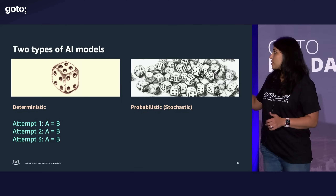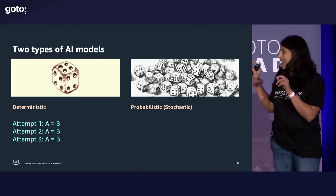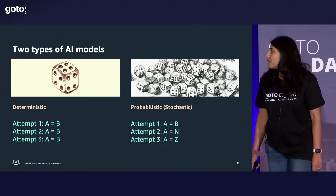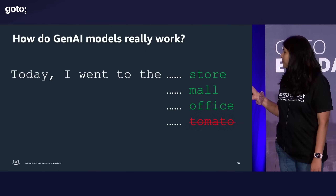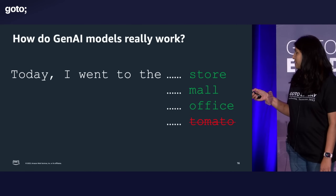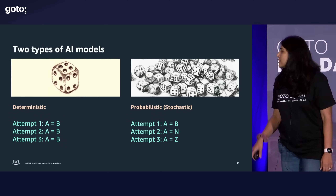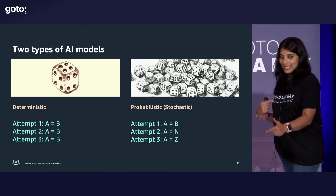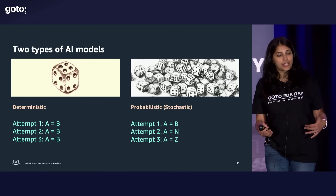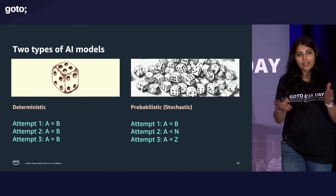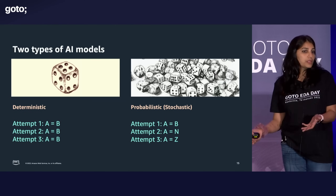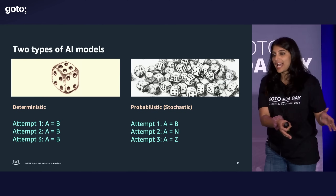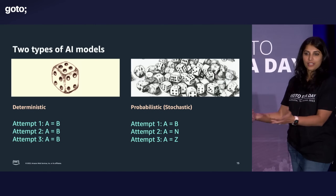Then there's the new kind of AI model, which is more probabilistic — or stochastic, if you want to be nerdy. With this new class of probabilistic models, every time you ask the question, the answer is very different. There are use cases where you need deterministic models, and there are use cases where you need a probabilistic model. And there are also use cases where you can do deterministic tasks with a probabilistic model, with a large language model as well. So how do you choose?